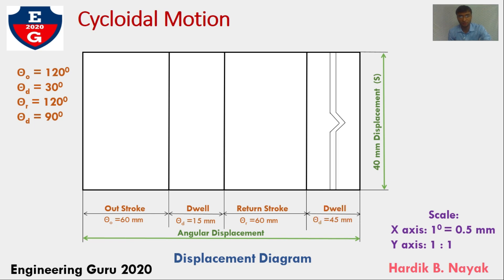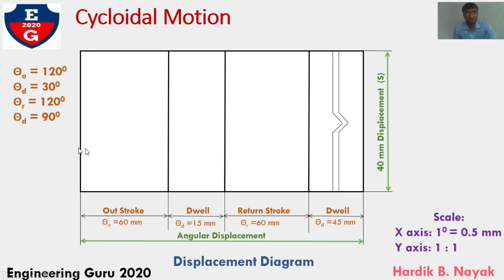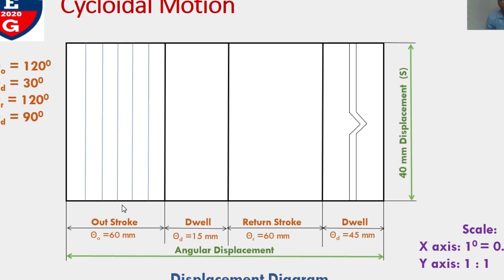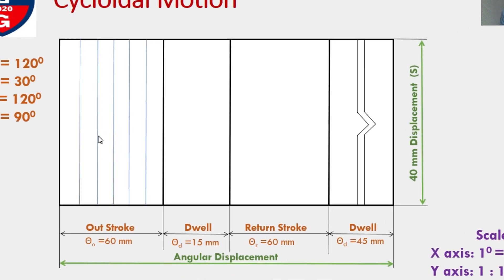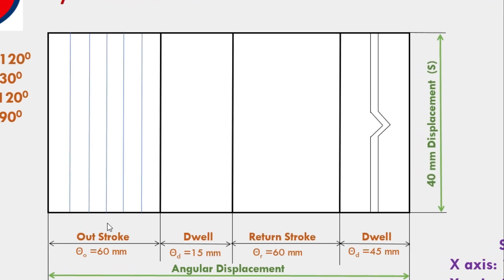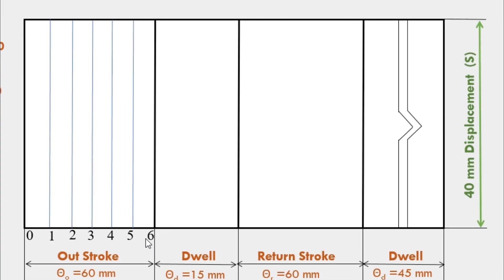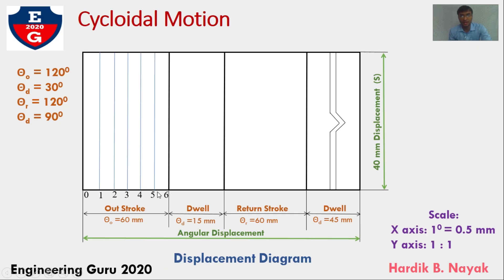Next, I would be dividing this outstroke into 6 equal parts and draw projected vertical line through all points and give notation from 0, 1, 2, 3, 4, 5 and 6. After outstroke, the angle turned by 120 degree. So, during the outstroke, follower would be reached maximum position. After this, there would be dwell for going to rest.